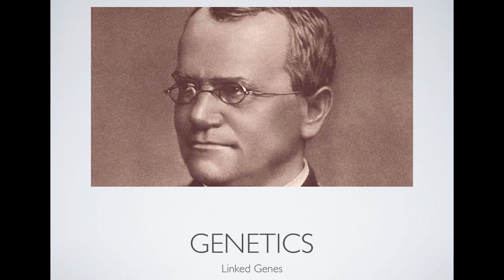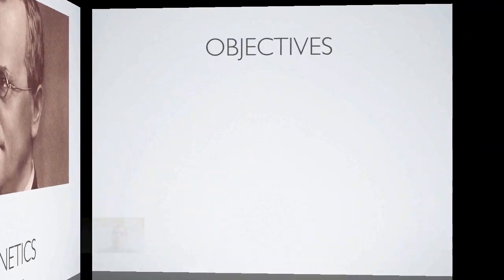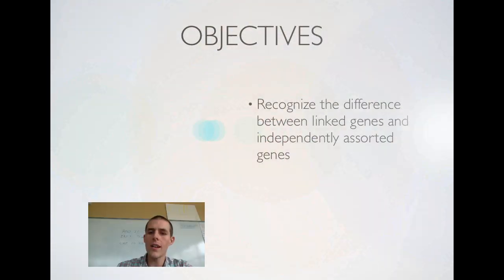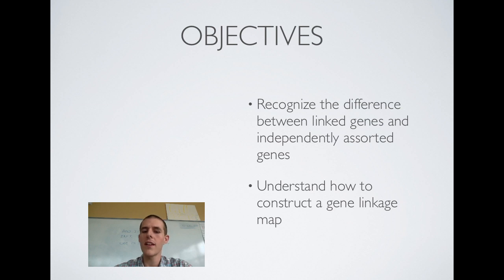Before we get into it, I will say that the ideas we're talking about today are a little bit complex, so forgive me if I use more words than I normally would. By the end of the video, here are the things that you need to know or be able to do. There's two objectives for the day. The first one is to recognize the difference between linked genes and independently assorted genes. And the second thing is to understand basically how to construct a gene linkage map.